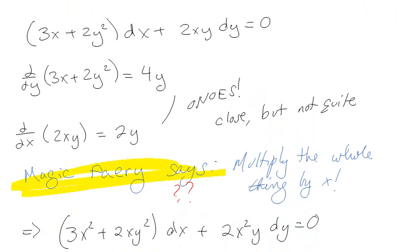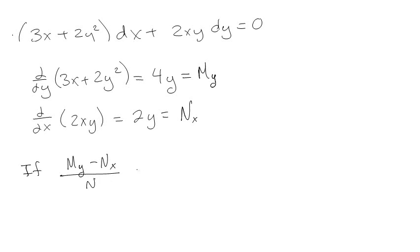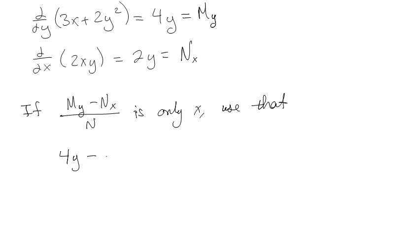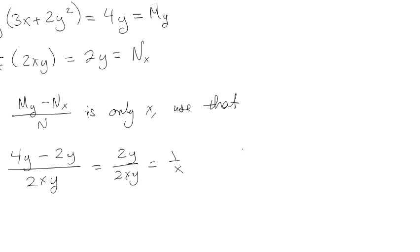Just to prove where the magic fairy came from, let's go back to the original problem. The first term gives My = 4y, the second gives Nx = 2y. So we check (My - Nx)/N, which is (4y - 2y) / (2xy). We get 2y over 2xy, which gives us 1/x — and indeed that is a function of x only, so we're going to use that.